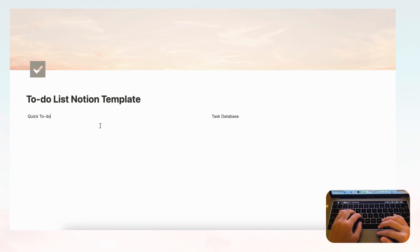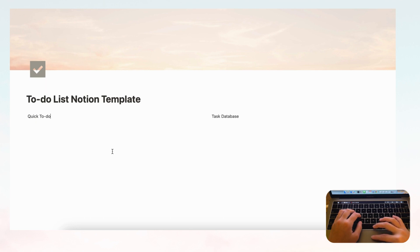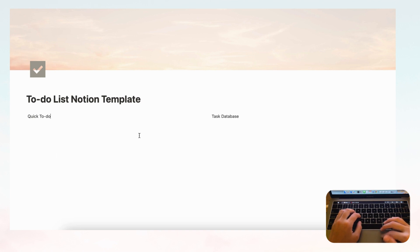The quick to-do on the left lets you add things you don't want to forget or need to do immediately. On the right side you can add lengthier tasks you need to keep track of. You could jot down quick to-dos on the left and later move them into the task database as needed.